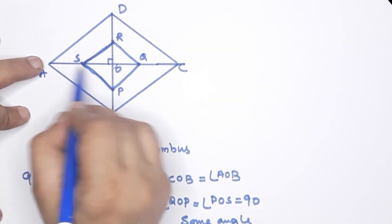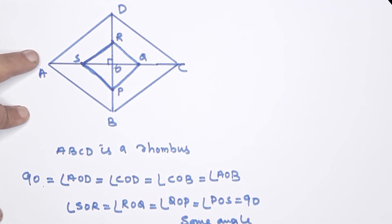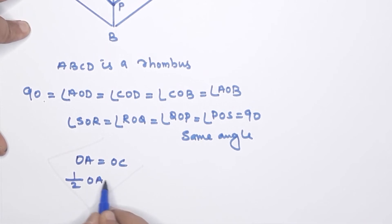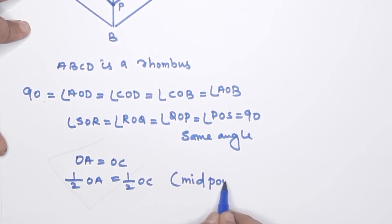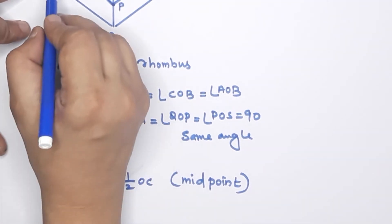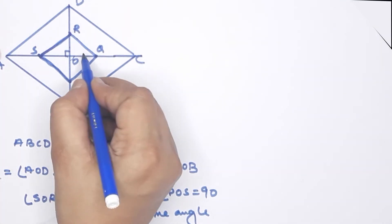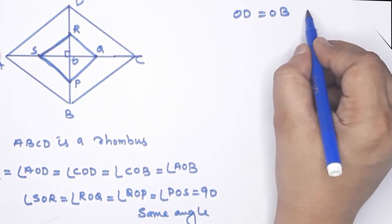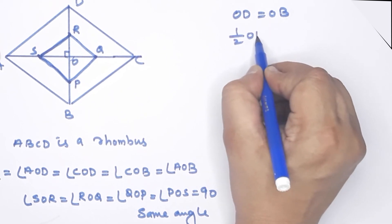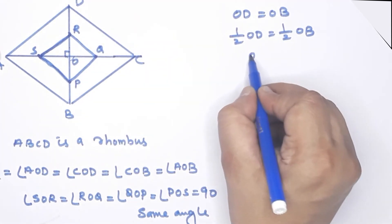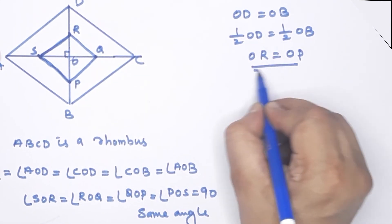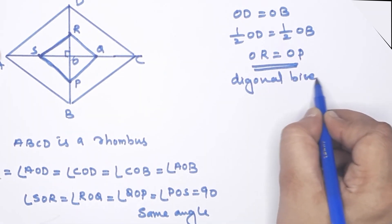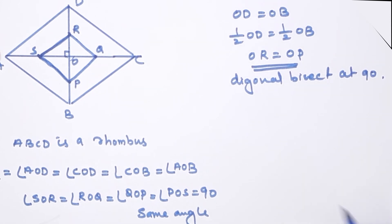Since ABCD is a rhombus, OA = OC (diagonals bisect each other), so half OA = half OC. Given P, Q, R, S are midpoints, OS = OQ. Similarly, OD = OB, so OR = OP. Therefore the diagonals of PQRS bisect each other at 90 degrees, proving PQRS is a rhombus.